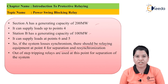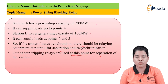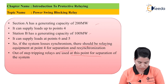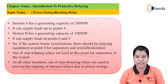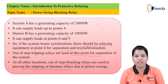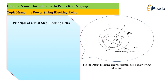Out-of-step relays are used at point 4 for separation of the system. At all other stations, out-of-step blocking relays are used to prevent tripping of the distance relay due to power swings. When the two generators lose synchronism there will be a tremendous amount of power swings, and the blocking relay prevents the distance relay from operating under this power swing condition.